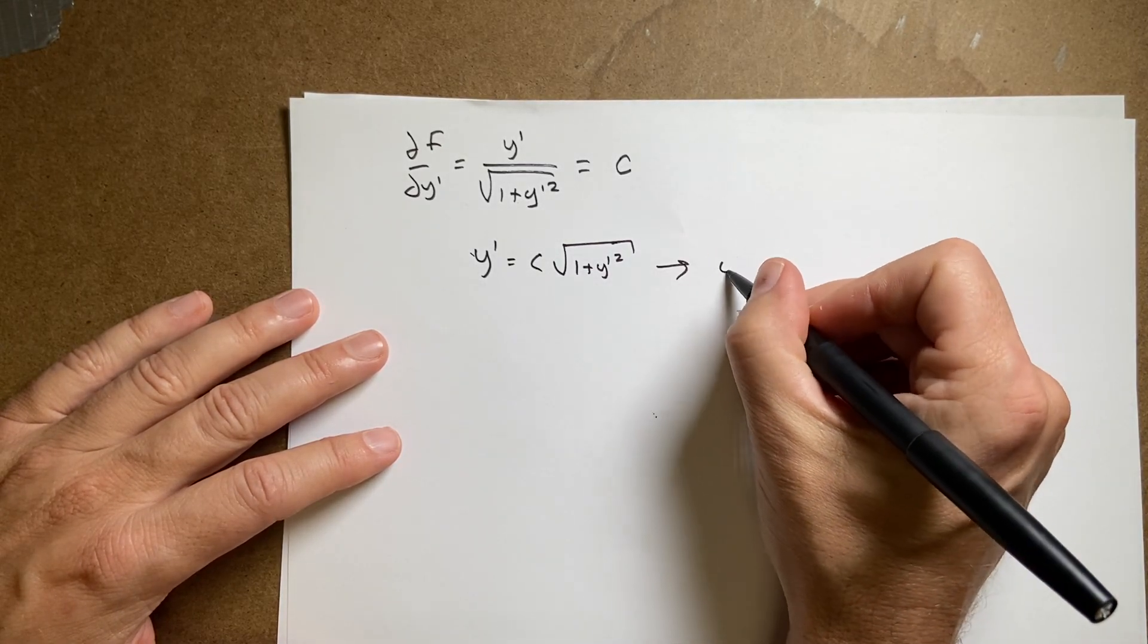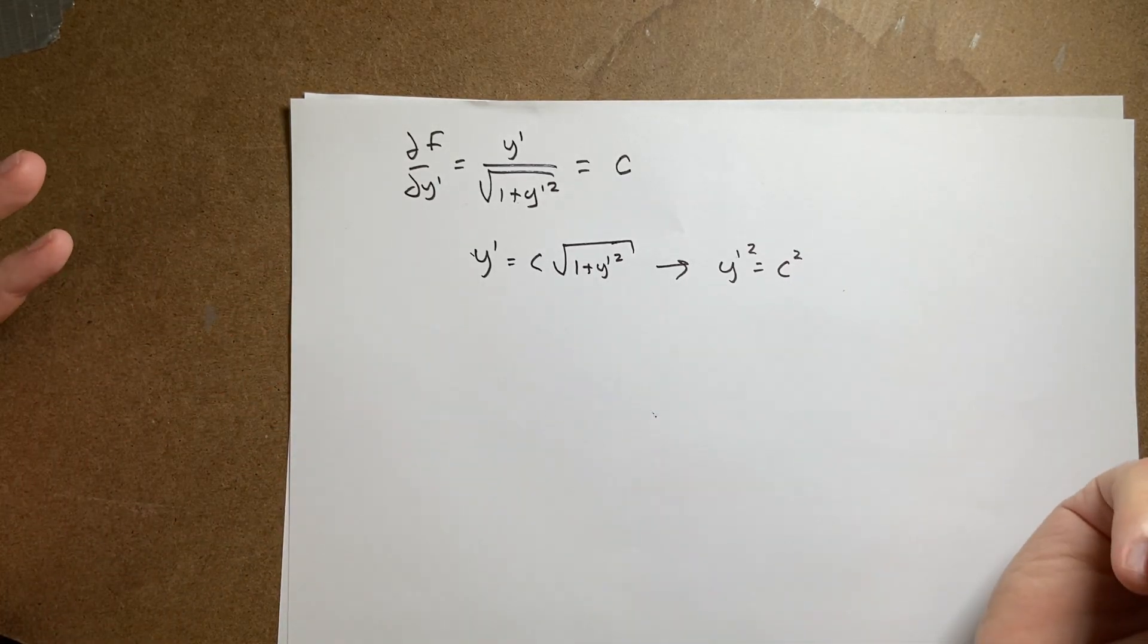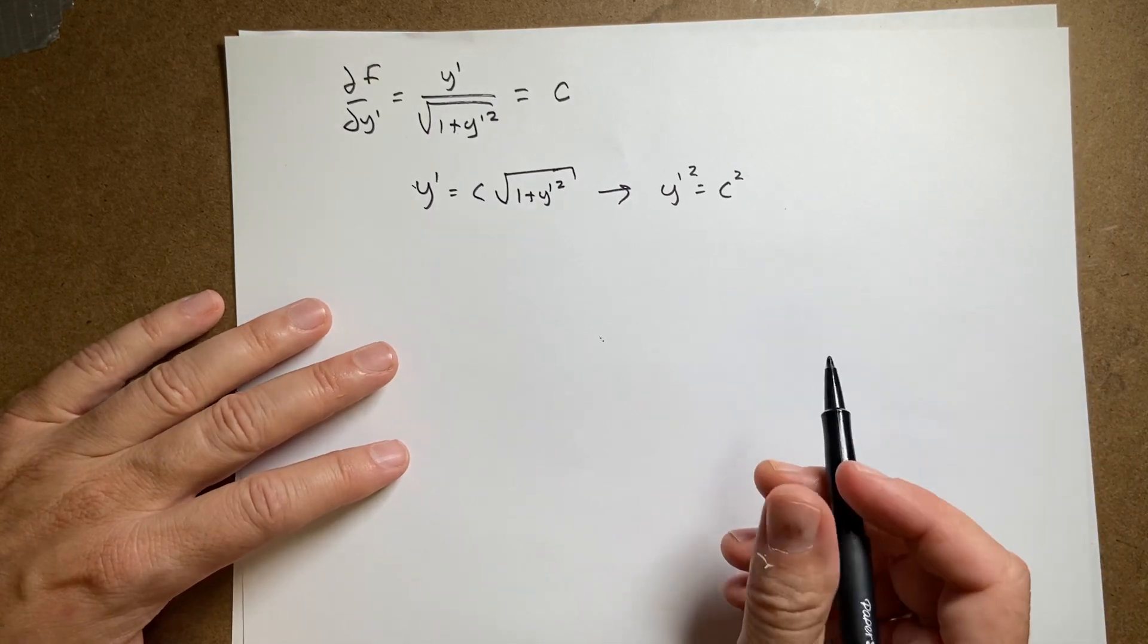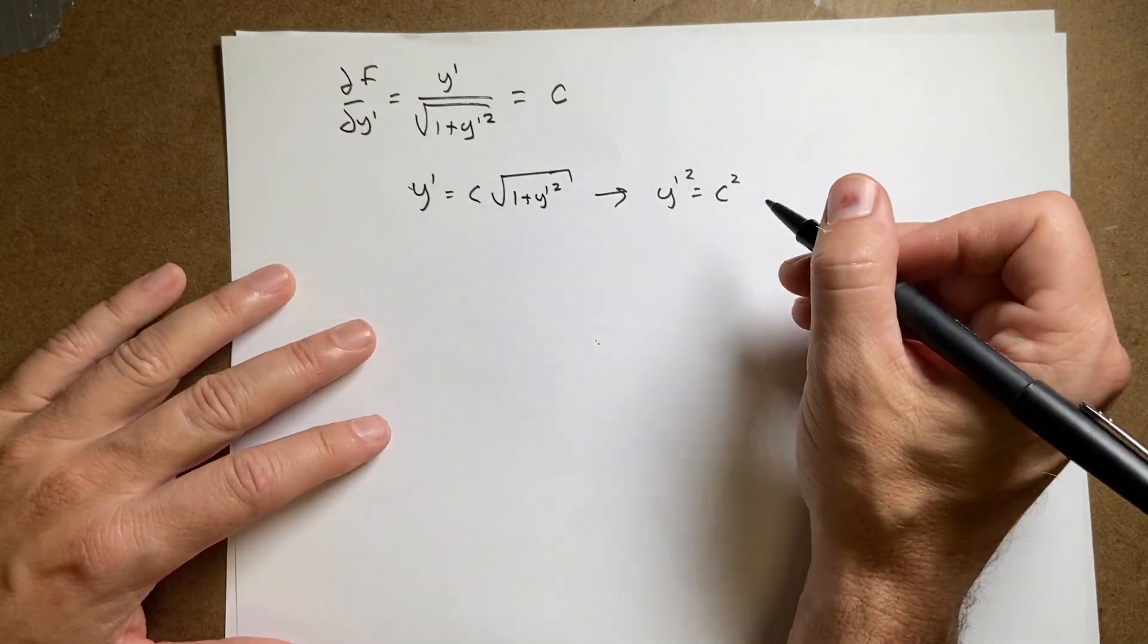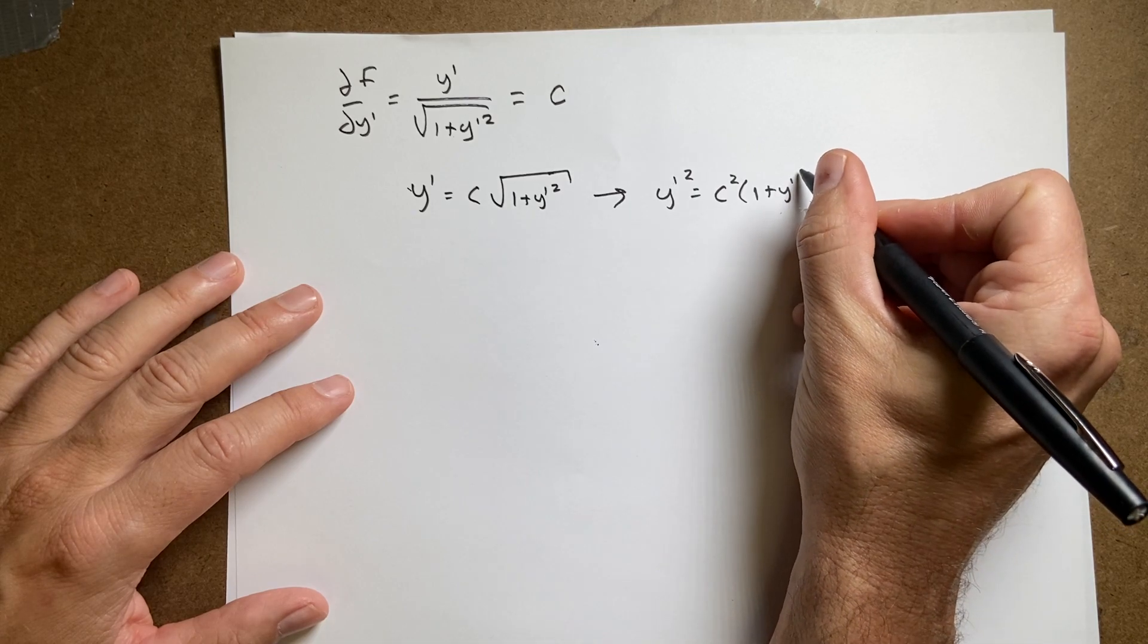Now, I'm going to square both sides, and I get y prime squared equals c squared. I mean, you could just call it c if you want. A lot of people do that. But I'm not going to do that, I'm going to write it as c squared, because I care about you guys. Times 1 plus y prime squared.